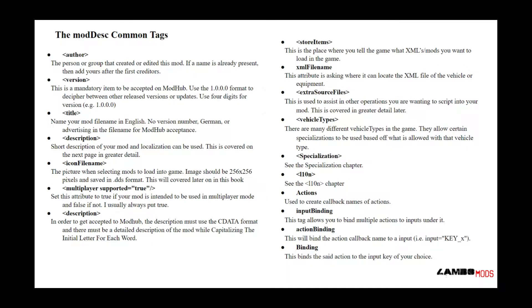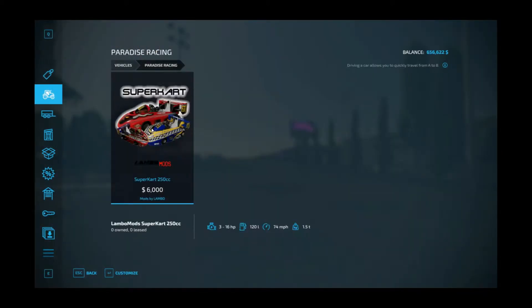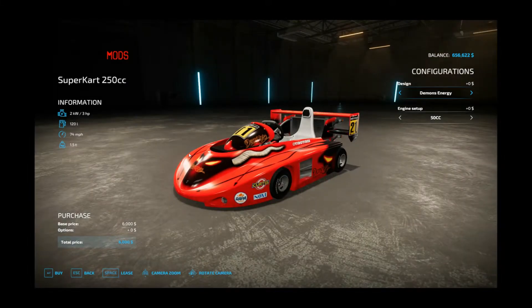Time to get into the fun stuff: extra source files. This is used to assist in other operations you're wanting to script into your mod and is covered in greater detail later, but we'll tap on a few things right now. When making this super cart mod, I used a categorizer and a mod change title that I called for using the extra source files to create a new category and a mod change title to 'Paradise Racing.' So this has its own separate choice when you're in-game going to buy it.